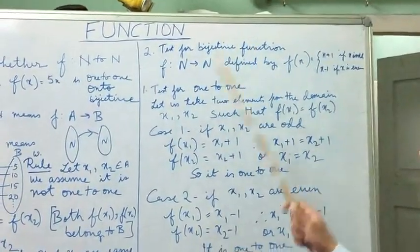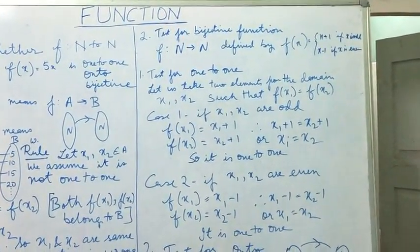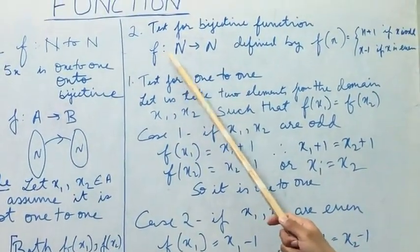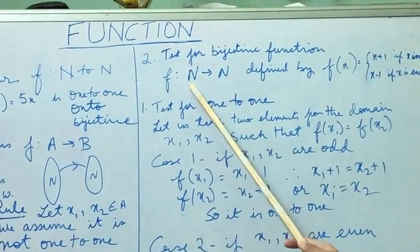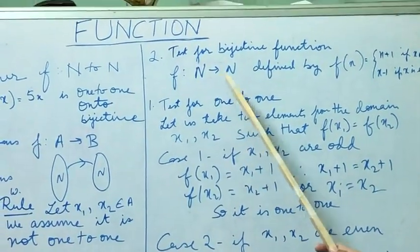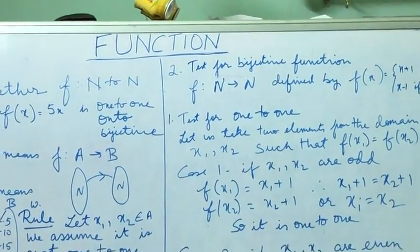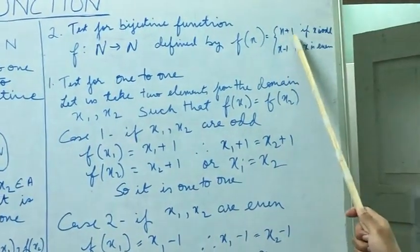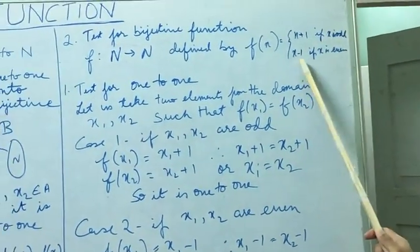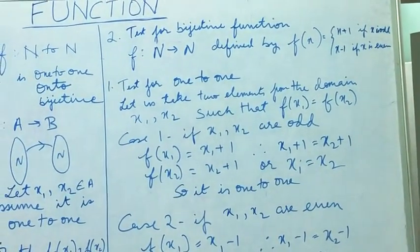We have to test for a bijective function. The function is from N to N, a set consisting of natural numbers to another consisting of natural numbers. It is defined by f(x) equals x plus 1 if x is odd and x minus 1 if x is even.